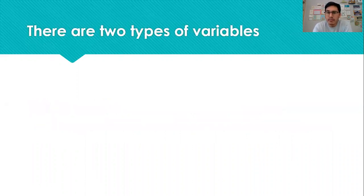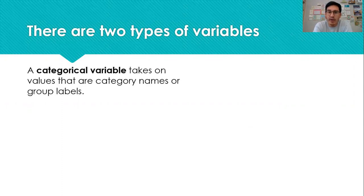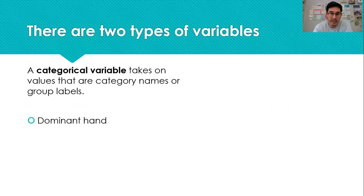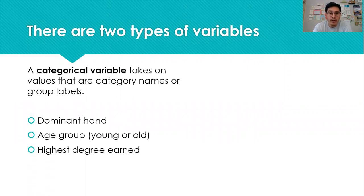The two types of variables we're going to focus on in AP Stats: the first is categorical variables, and these take on either some category name or a group label. Examples include dominant hand — we'd use the labels left and right — age group could be categorized as young or old, and highest degree could be high school, bachelor's, master's, or doctorate.